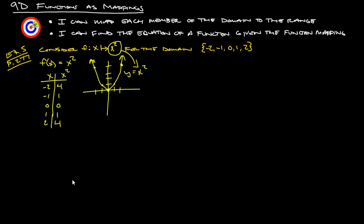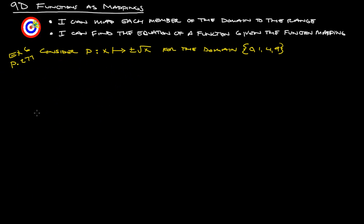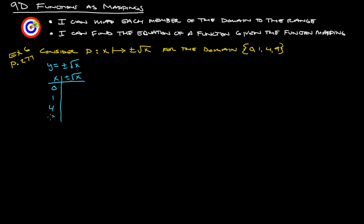Let's take a look at some more examples. This is example 6 from page 277. Consider the function p such that x is converted into plus or minus the square root of x for the domain 0, 1, 4, and 9. Same thing — let's make ourselves a little t-chart. I'm going to rewrite it as y equals plus or minus the square root of x, so x on one side and plus or minus the square root of x on the other.